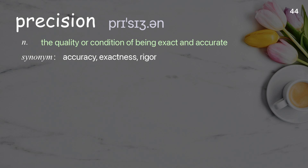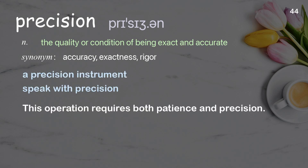Precision: the quality or condition of being exact and accurate. Examples: a precision instrument, speak with precision. This operation requires both patience and precision.